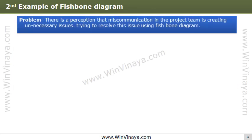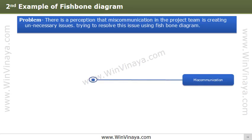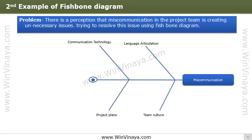Another example: problem statement — lots of escalations and firefighting happening in a project due to miscommunication. To understand why there was miscommunication, we use the fishbone diagram. We list various categories of causes such as language articulation, communication technology, team culture, and project plans, then identify the cause under each category and arrive at reasons using the five whys technique.